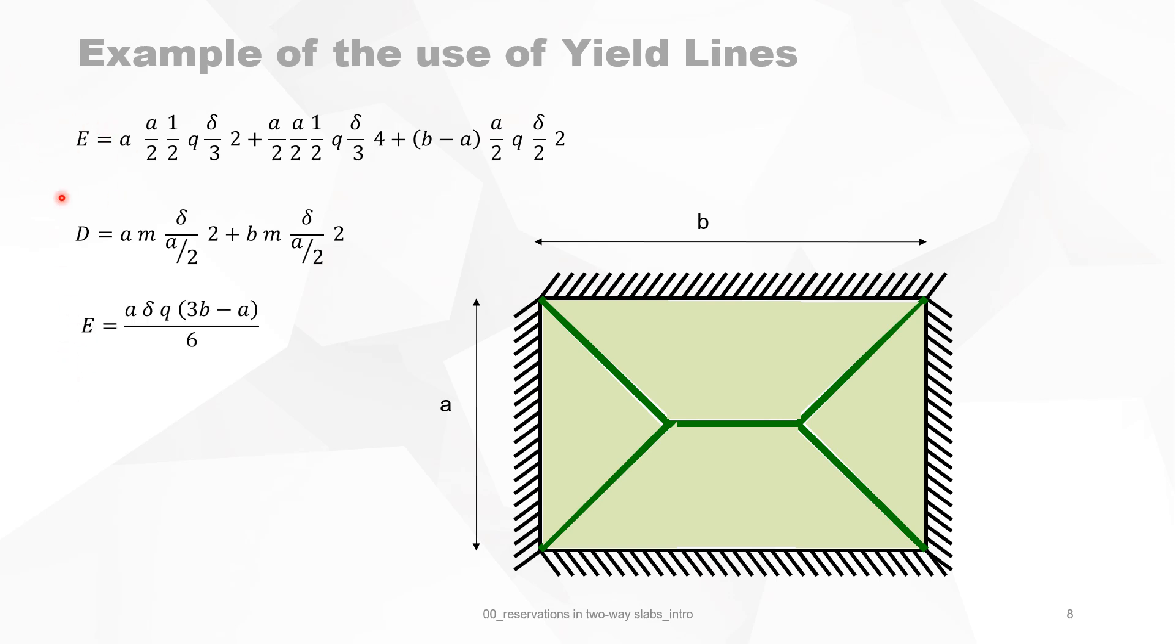So you can rewrite it in a simpler way for the work done by external and internal. Then we make E equal to D, and we obtain M, and M is then QA squared over 24 times this factor.